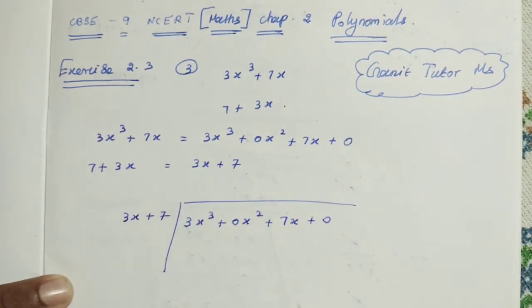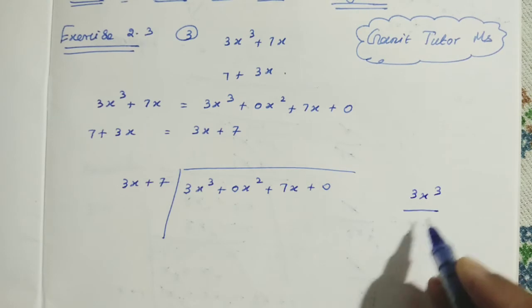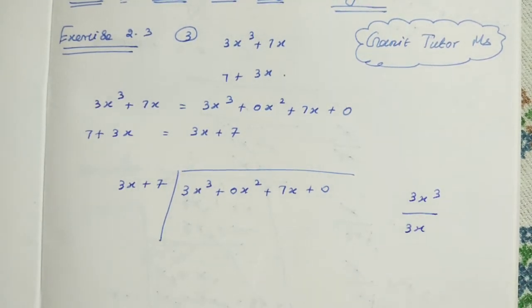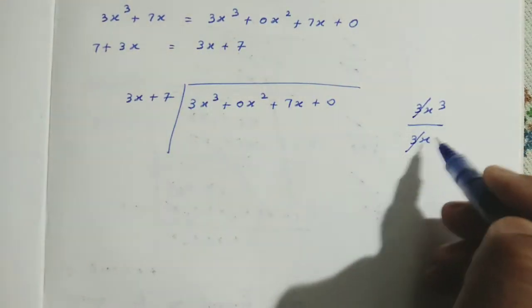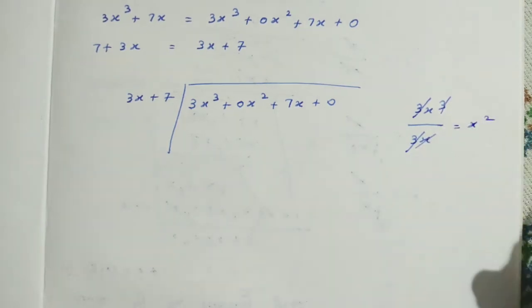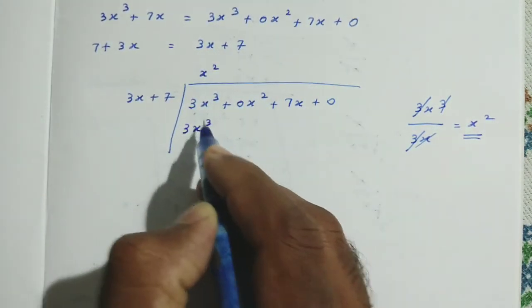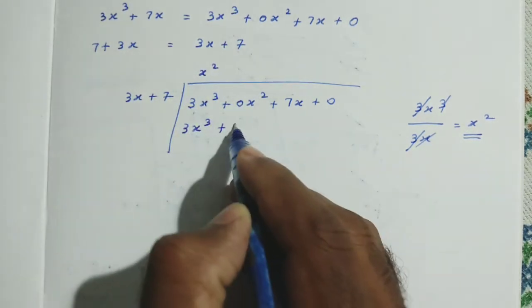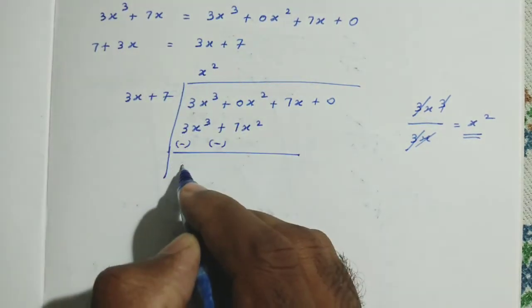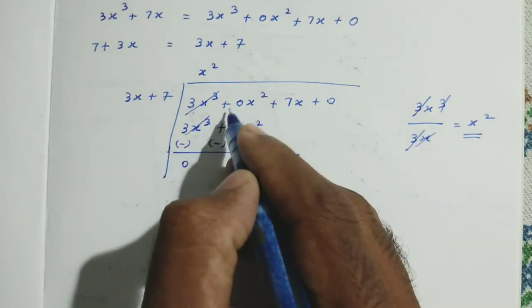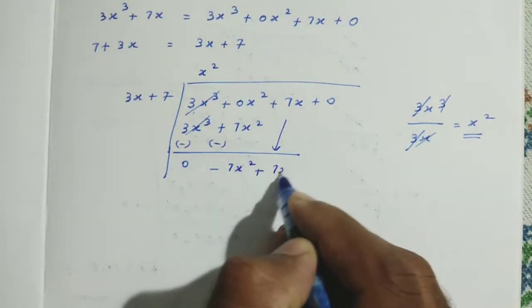Now we divide 3x cubed plus 0x squared plus 7x plus 0 by 3x plus 7. First, we take the first term: 3x cubed divided by 3x. The 3 and x cancel, leaving x squared. So we write x squared in the quotient. Then x squared multiplied by 3x gives 3x cubed, and x squared multiplied by 7 gives 7x squared. We subtract, and the 3x cubed terms cancel, giving minus 7x squared. We bring down plus 7x.